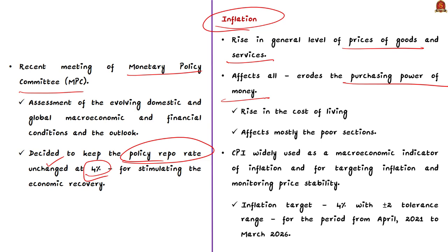Inflation is very dangerous because it affects the poor section of society — for the same money, they are able to buy only fewer goods. Controlling inflation is therefore an important aspect of our economy. In the context of India, Consumer Price Index, CPI, is the macroeconomic indicator of inflation. Our government and RBI use the Consumer Price Index to measure inflation.